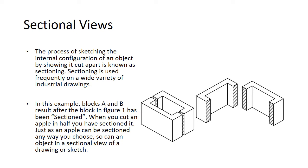The process of sketching the internal configuration of an object by showing it cut apart is known as sectioning. Sectioning is used frequently on a wide variety of industrial drawings. In this example, this is what a block looks like after it was sectioned. When you cut an apple in half, you have sectioned it. Just as an apple can be sectioned any way you choose, so can an object in a sectional view of a drawing or sketch be sectioned.